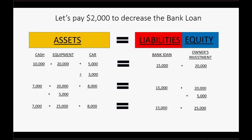Let's do one more. Let's pay $2,000 to decrease the bank loan. If we pay to decrease the bank loan, our cash goes down by $2,000 and the bank loan also goes down by $2,000. The new amount of cash we have is $5,000 and the new amount we owe to the bank is $13,000. Because none of the other numbers changed during this transaction, the accounting equation stays equal.